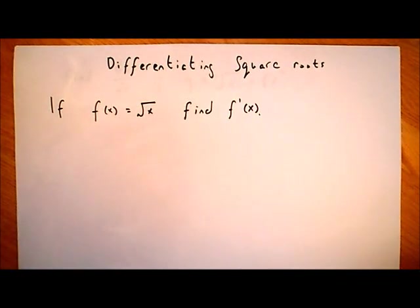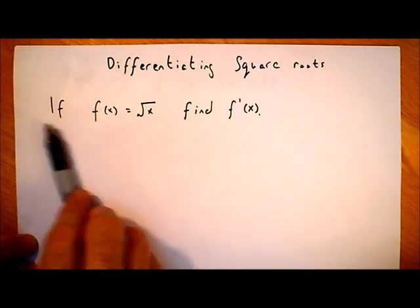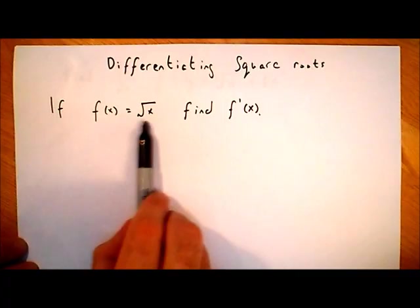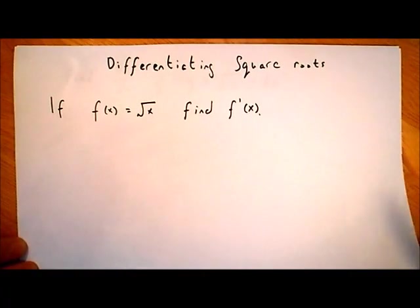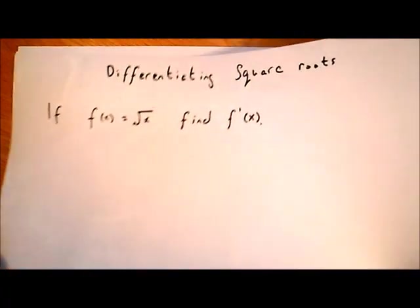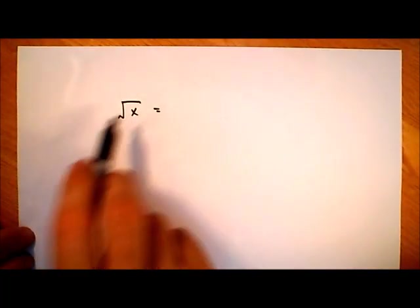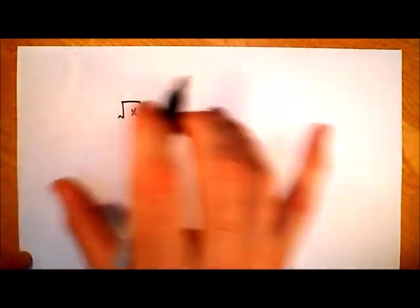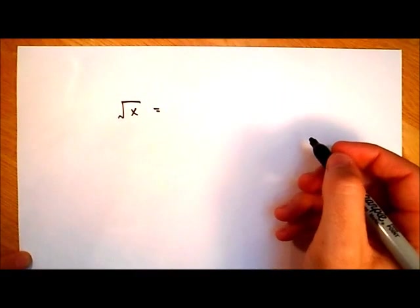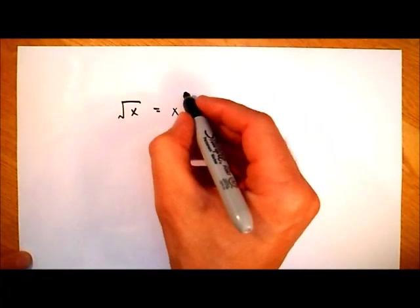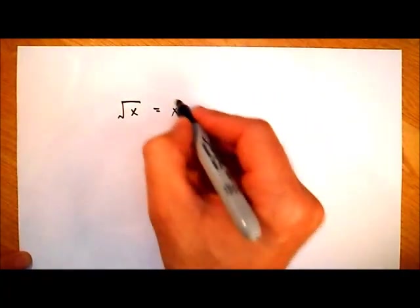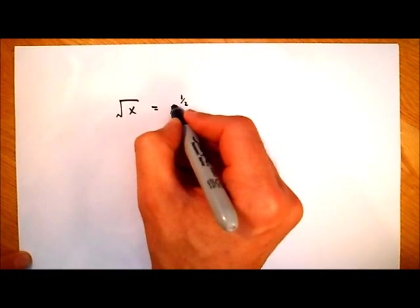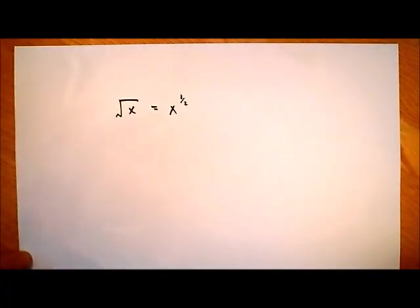We're going to have a look at differentiating square roots. So if f of x is equal to the square root of x, we have to find f dash of x. Before we do that, I just want to have a look at square roots. The square root of x is the same as x to the power of a half. That's important — we're going to have to use that when we're differentiating.